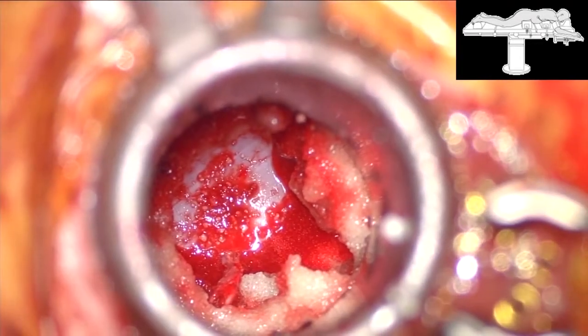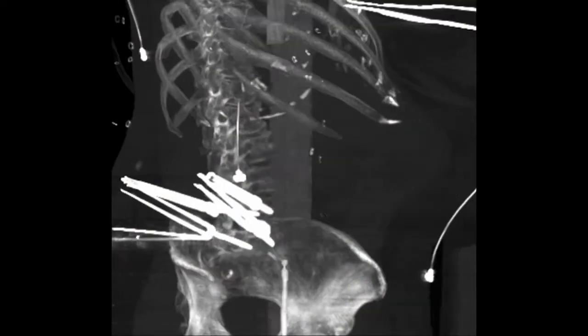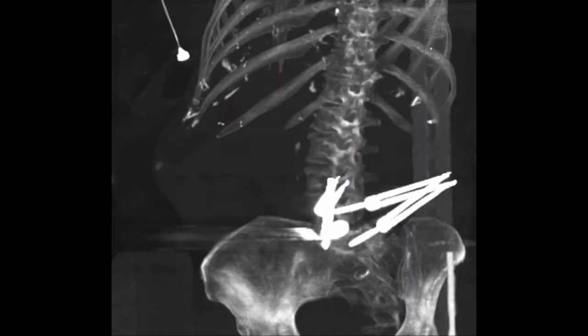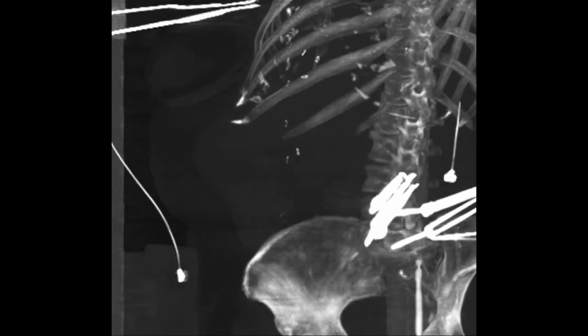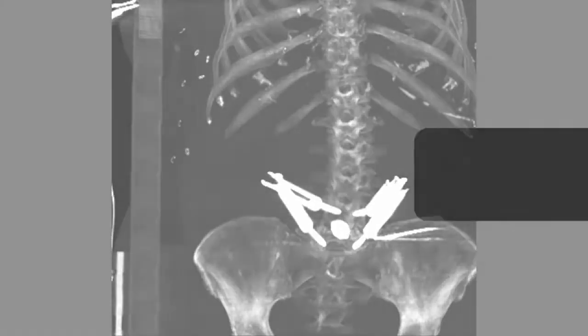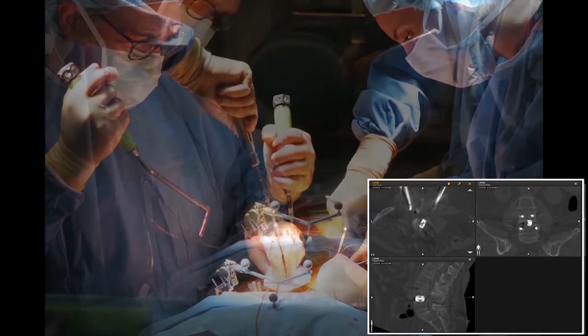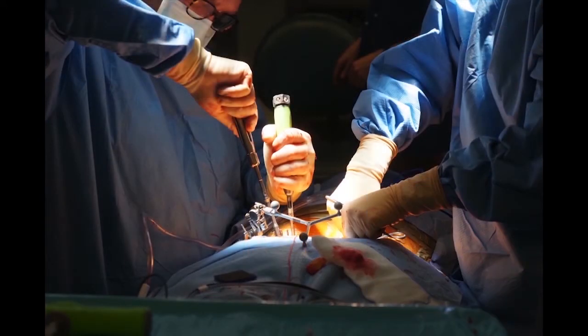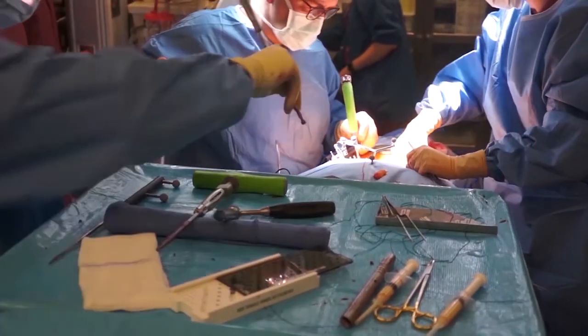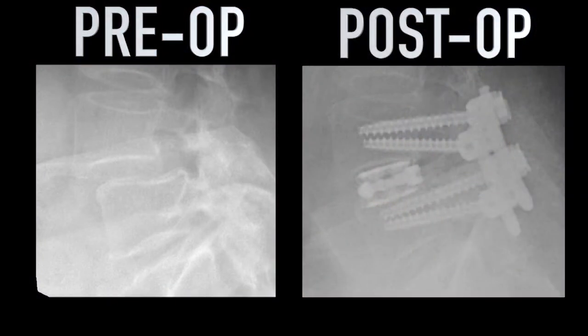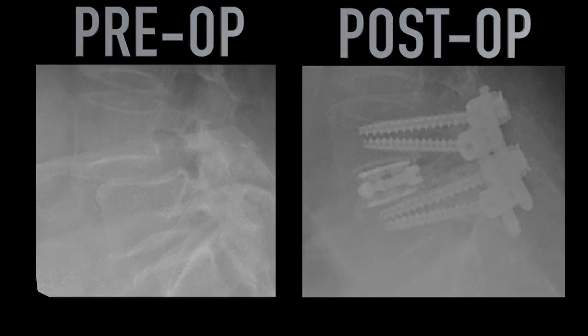Hemostasis is achieved and the tubular retractor is carefully removed. A post-decompression intraoperative CT scan confirms placement of all instrumentation. Bilateral rods are placed and locked based on intraoperative CT measurements. A posterolateral fusion can be performed by placing additional bone graft. Pre- and postoperative X-rays show good instrumentation in place. The incision is infiltrated with marcaine, the patient is mobilized the same day of surgery, and discharged to the floor for an overnight stay.